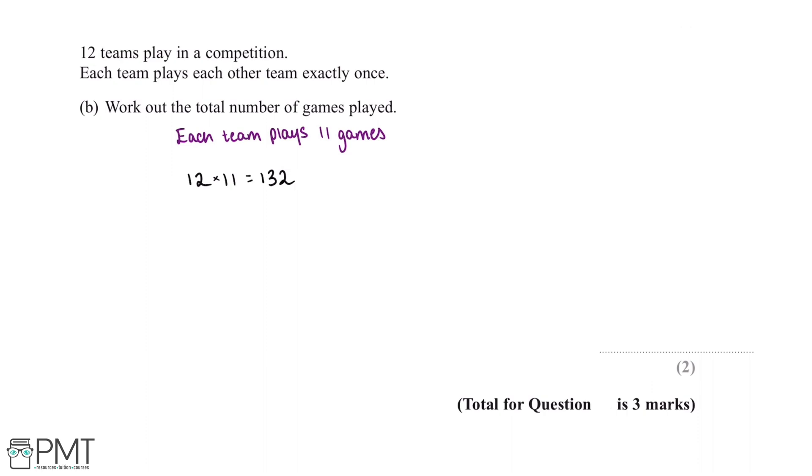Now if we think about it, because there are two teams in each game, we have effectively double counted each of these games. So in order to work out the total number of games played, we want to divide our answer by two. And this gives us an answer of 66.